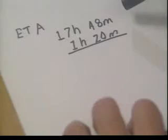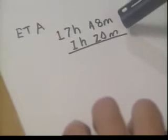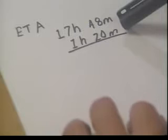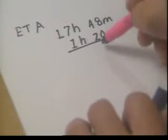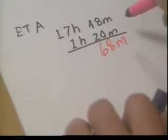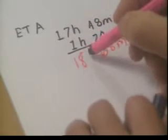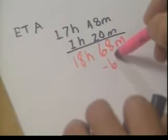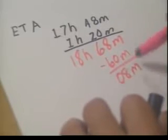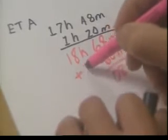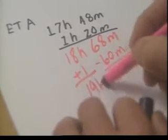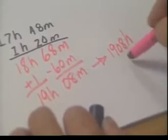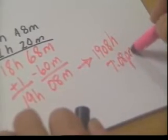Now let's look at adding time. We have our current DR and we've determined how long it's going to take to get to our next anchorage. We add these together to get our ETA — estimated time of arrival. First, add the minutes column: we get 68 minutes. Then add the hours column: 18 hours. Since 68 minutes is greater than one hour, we subtract 60 minutes from that side, leaving 8 minutes, and carry the hour over to the hours column. We come up with 19 hours and 8 minutes — 1908 hours, or 7:08 p.m.